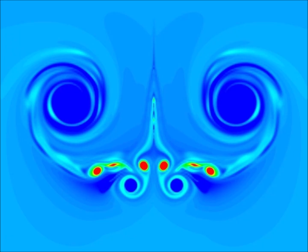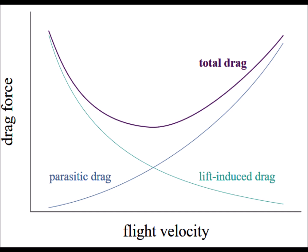A closed wing avoids the need for wingtips and thus might be expected to reduce wingtip drag effects. The upshot is that although closed systems can produce large induced drag reductions relative to a conventional planar wing, there is no significant aerodynamic advantage that uniquely accrues to their being closed rather than open.